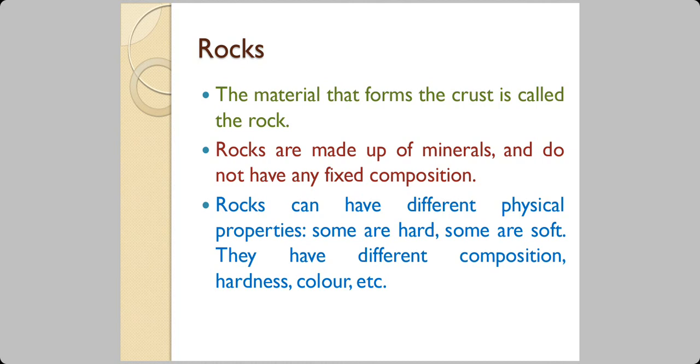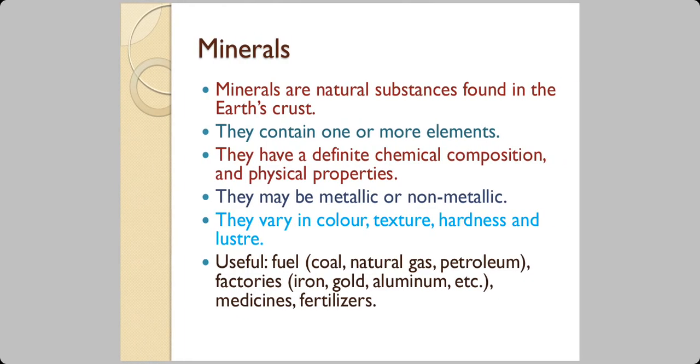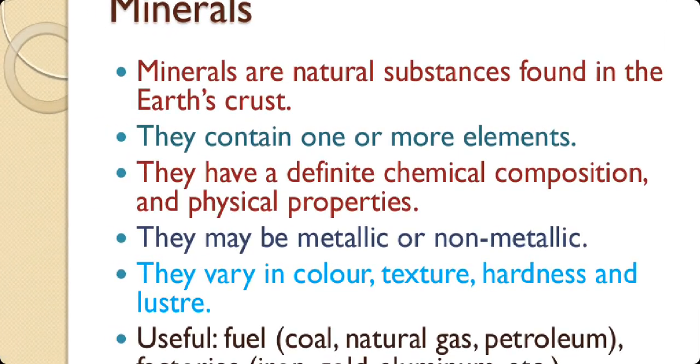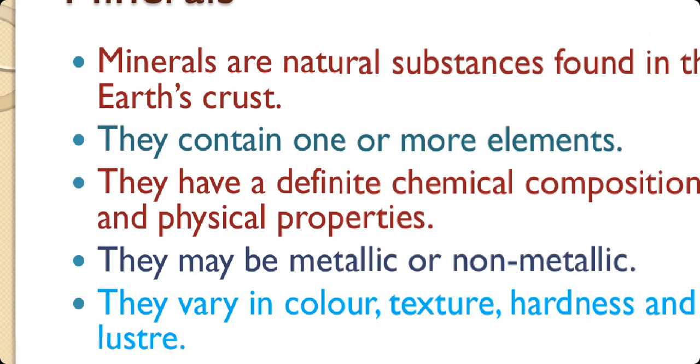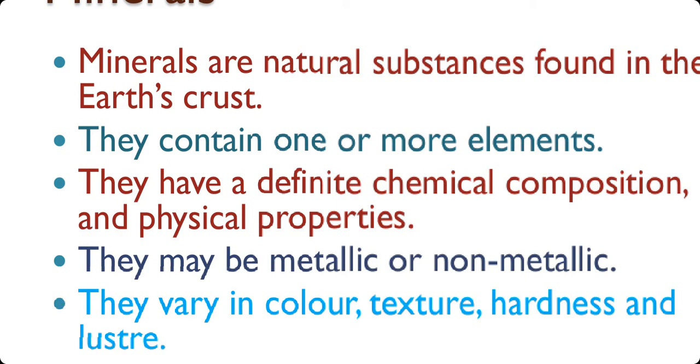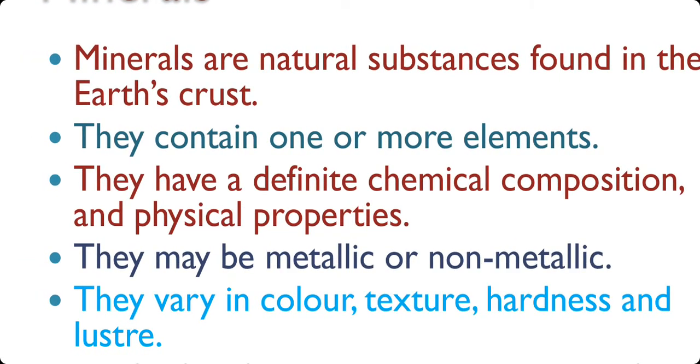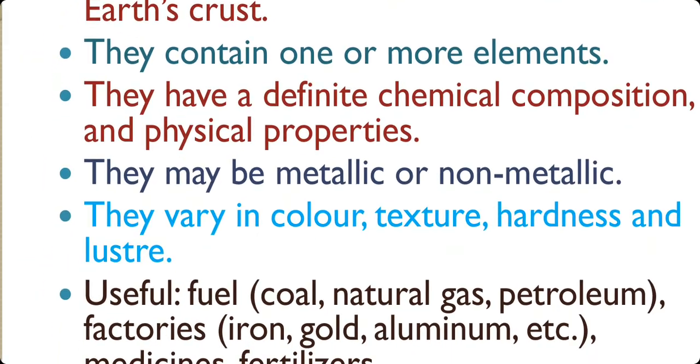Rocks can have different physical properties. Some are very hard, some are soft, some have different composition, and the color may also be different. Minerals are natural substances found in the earth's crust. They contain one or more elements. They have a definite chemical composition and physical properties. They may be metallic or non-metallic.